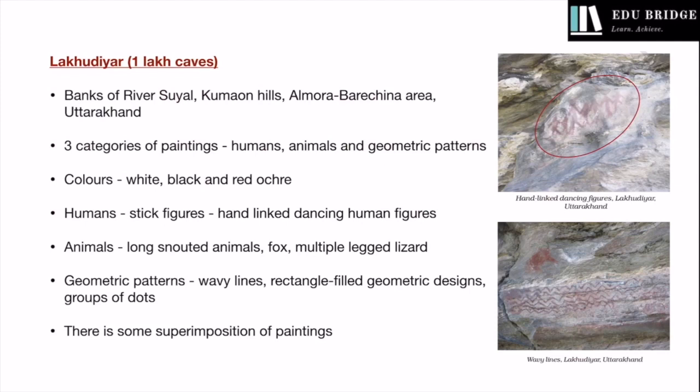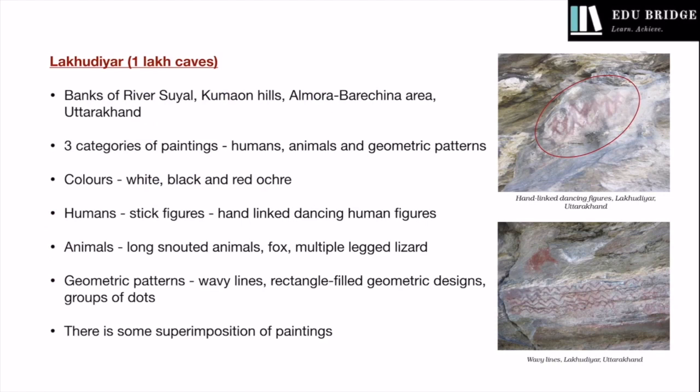Let us talk about the Lakhudiyar Caves. Lakhudiyar literally means 'one lakh caves,' though there are not actually a lakh caves. It is located in Uttarakhand, specifically on the banks of the river Suyal, in the Kumaon hills, in the Almora-Barechina area. Three types of paintings are found here: humans, animals, and geometric patterns. Three colors are prominent: white, black, and red ochre.